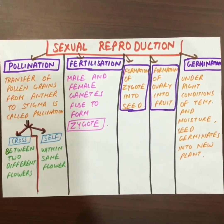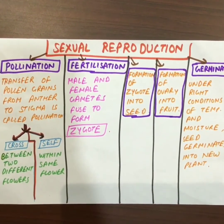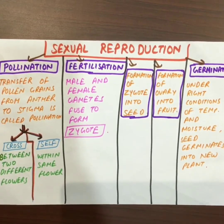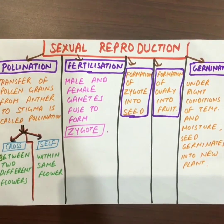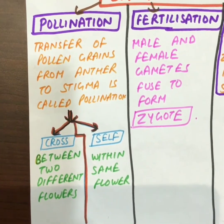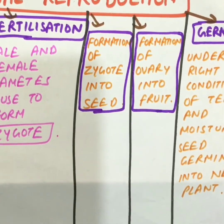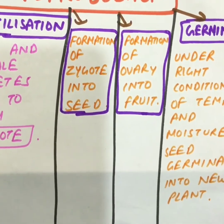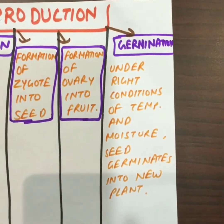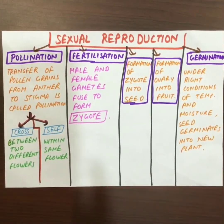Now let us learn about sexual reproduction — it has five steps. Step one is pollination: transfer of pollen grains from anther to stigma. There are two types: cross-pollination, which takes place between two different flowers, and self-pollination, which takes place within the same flower. Step two is fertilization: the female and male gametes fuse together to form a zygote. Step three involves the formation of the zygote into the seed and the ovary into the fruit. The last step is germination, in which under suitable conditions of temperature and moisture the seed germinates into a new plant.